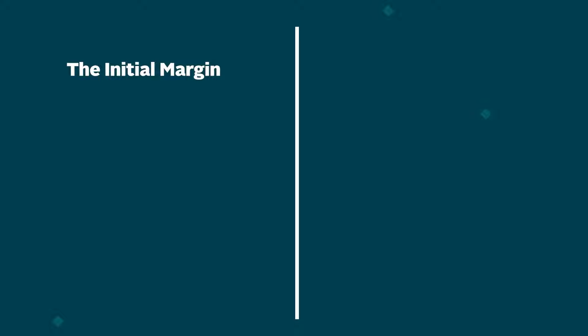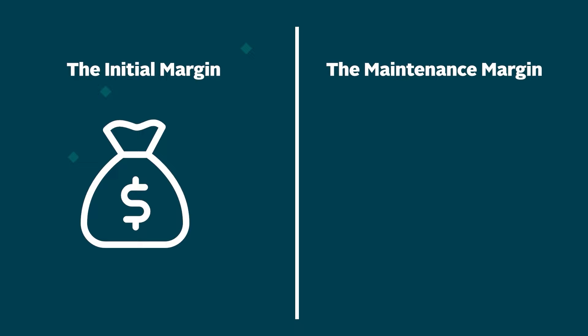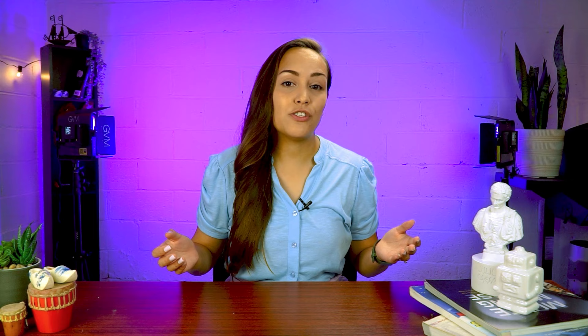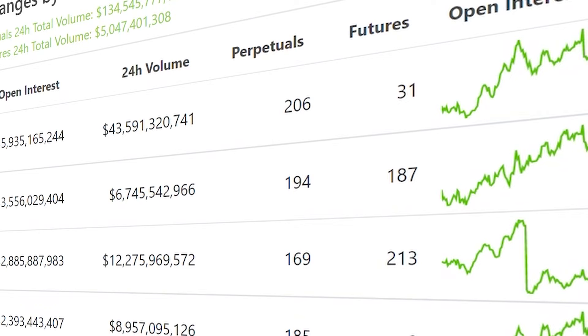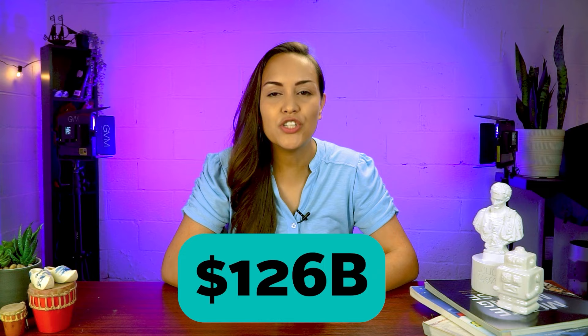Let's quickly see how liquidation may happen in Mercy's case, but first let's break down the initial margin and the maintenance margin. The initial margin is the minimum value that needs to be paid to open a leverage position — for illustration, let's set this at $30,000, meaning Mercy pays an initial margin of $30,000 as collateral to open a two times leverage position. The maintenance margin is the minimum amount of collateral Mercy must hold to keep her trading positions open. If Bitcoin's price moves against Mercy and her margin balance drops below this level, she may be asked to add more funds or be liquidated. Perpetuals are by far the most traded financial instruments in crypto — at the time of this video, the 24-hour volume of perpetuals was over $126 billion compared to futures' $5 billion.